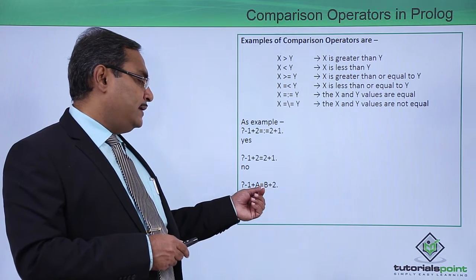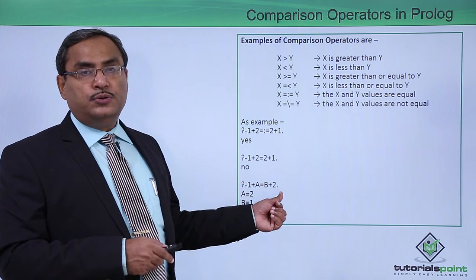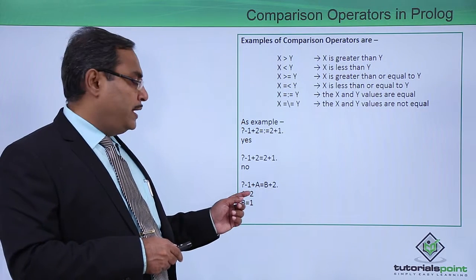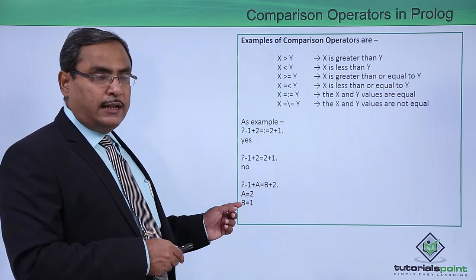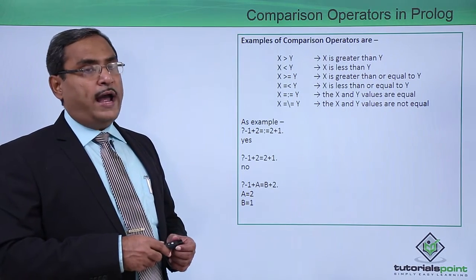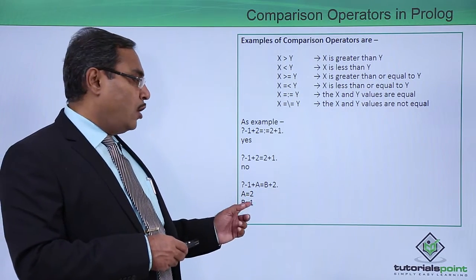1 plus A is equal to B plus 2. In that case, here we are using equal to symbol. A and B are two variables and they will get instantiated with the respective values 2 and 1. In this way the outputs will be obtained.